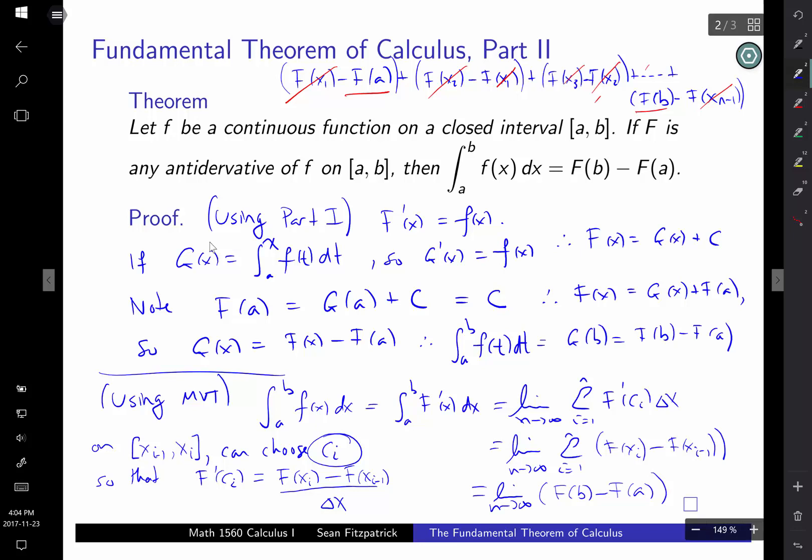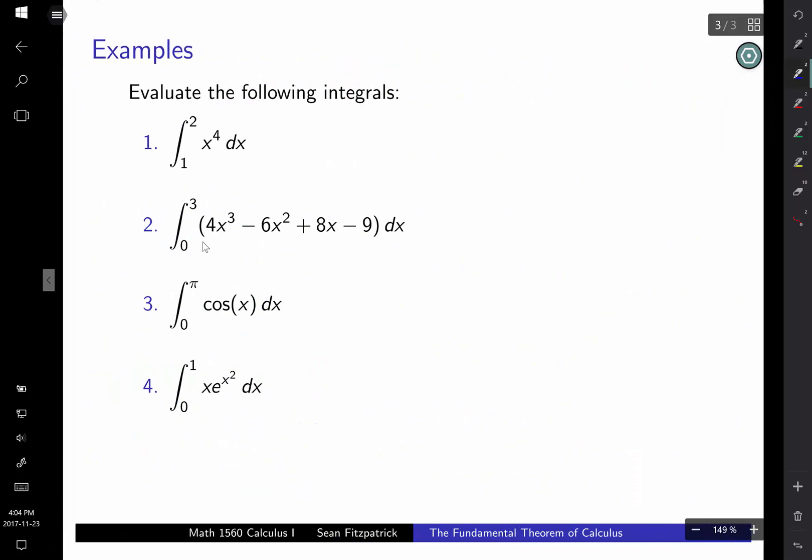So a couple different ways of seeing that this one is true. I think, you know, this result is important enough. It's useful enough. You're going to use it constantly for the rest of calc 1. And for probably like the first month, maybe even two months of calc 2. So I think it's worth two proofs. It really is the most important result in your first year calculus courses.